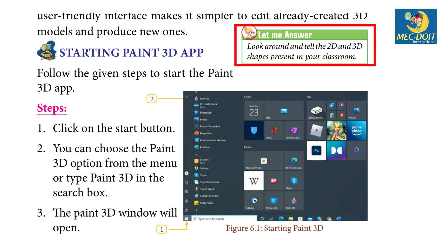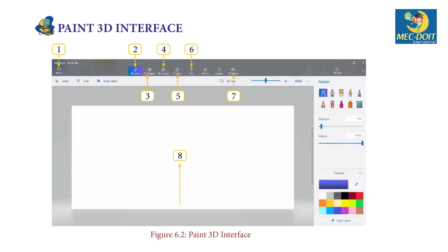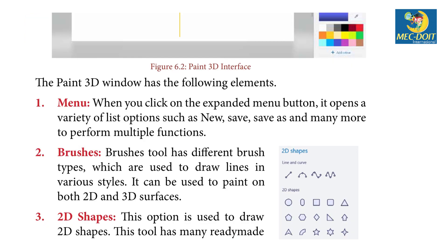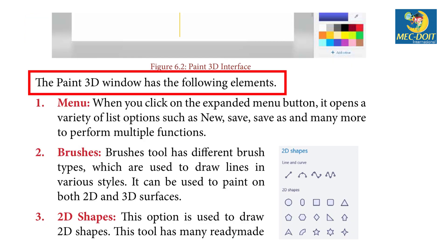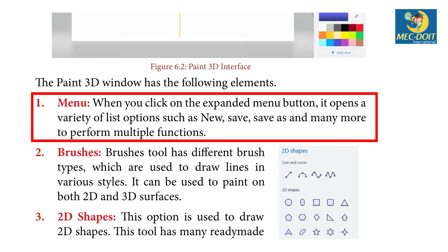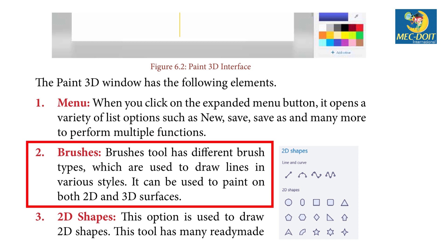Let me answer: Look around and tell the 2D and 3D shapes present in your classroom. Paint 3D Interface — the Paint 3D window has the following elements: 1. Menu — when you click on the expanded menu button, it opens a variety of list options such as New, Save, Save As, and many more to perform multiple functions.